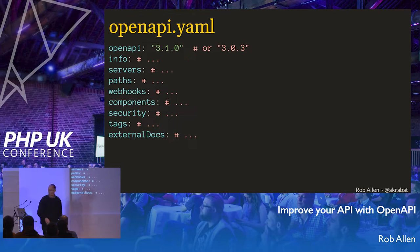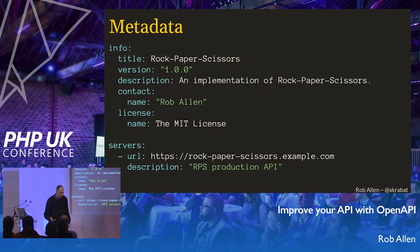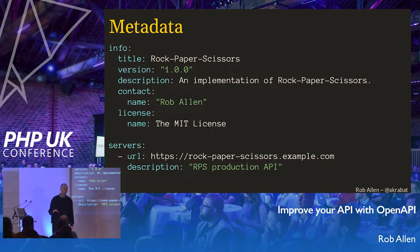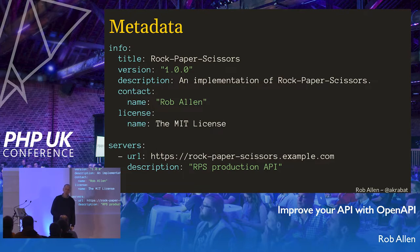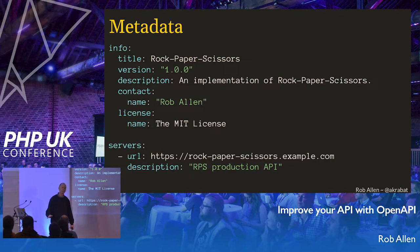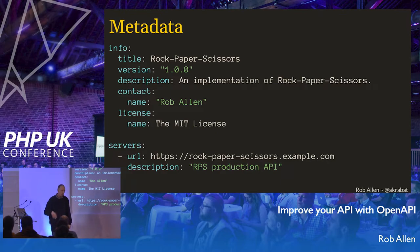Then we have metadata — things like info, which contains title, version, description, contact information. Contact is really helpful if you're going to be publishing this anywhere so people know where to get help. For a company API, put a generic contact in there — don't put your lead developer's contact or your VP of engineering's contact. You also list your servers: where your staging, development, and production servers are, which allows the tooling to find and discover them. Then you get to the paths — all the operations that this API can do.